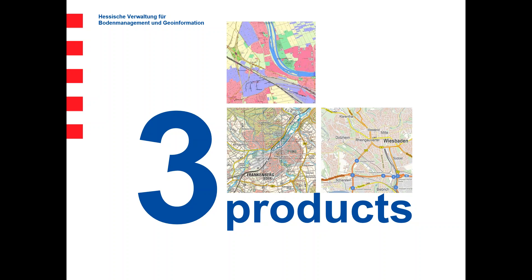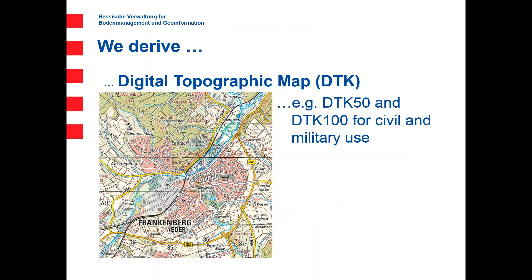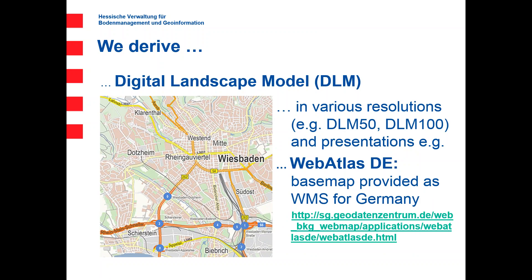Coming to the products we provide using these workflows, there are three standardized products that all states must provide. First, digital topographic maps — the example shown is DTK 50, but we have DTK 10 through DTK 100 produced within the states. Second, we derive digital landscape models in various resolutions for map production but also as standalone products. Third, we use them for presentations like webatlas.de, which is a base map of Germany provided as a free web map service accessible to everyone.